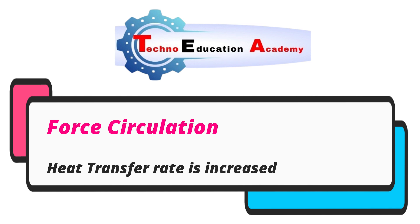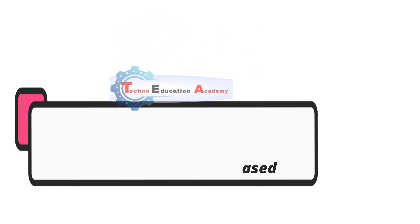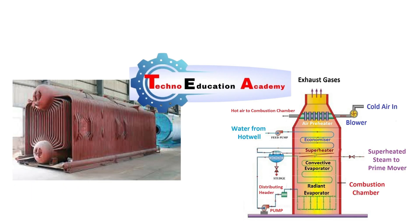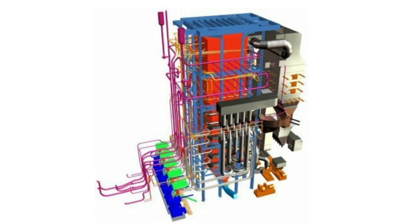The second feature is the arrangement of tubing and drum in water tube boilers. If flow takes place through one continuous tube, a large pressure drop occurs due to friction. If the water tubes are arranged in parallel, the pressure losses due to friction are reduced considerably and it provides better control over the quality of steam. High pressure boilers use very small size drums, and in supercritical boilers the drum is completely absent.